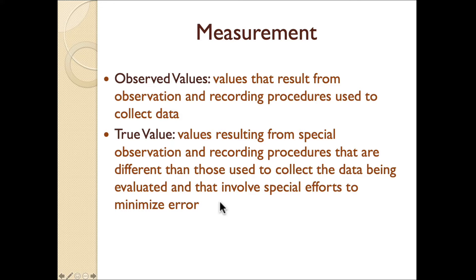The true value is defined as values resulting from special observation and recording procedures different from those used to collect the data being evaluated, and involves special efforts to minimize error. In applied behavior analysis, true value becomes tricky because it relies on somebody observing — it doesn't remove itself from observed values. For example, if we were observing a student typing keys on a keyboard, the computer could record true values because those would be different from what the observers are doing. The observers are observing the key presses and recording, while the computer has mechanisms to record each keystroke. So true value is attainable in that scenario.